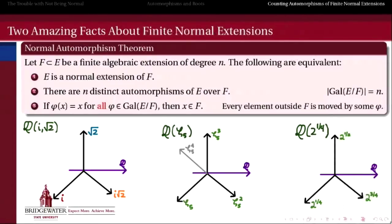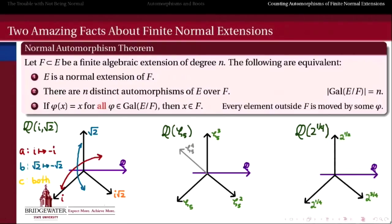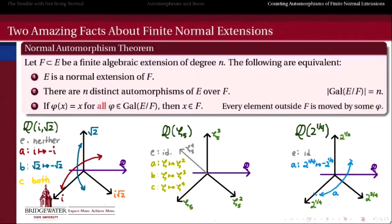The statement is: if I have a normal extension E over F, then the only elements of E which are fixed by every element of the Galois group — in other words, every automorphism fixes — are exactly those elements which belonged to the base field F in the first place.